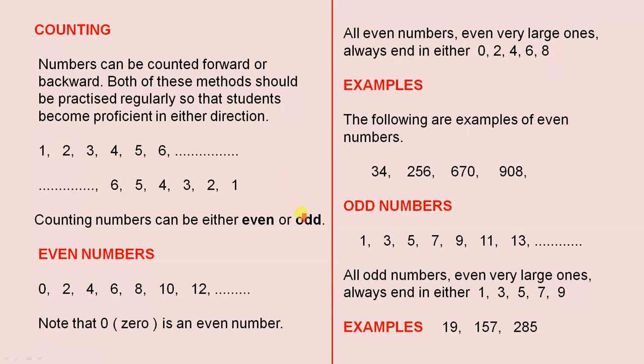Counting numbers can be either even or odd. The even numbers are 0, 2, 4, 6, 8, 10, 12, etc., and they continue on. Note that 0 is an even number. Some people get a bit confused about that, but it is an even number.